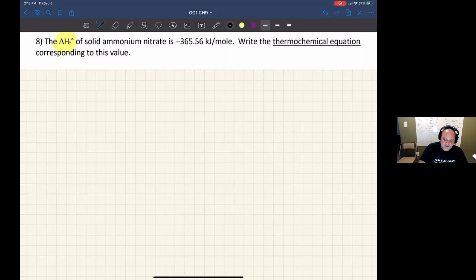So what are we looking at? We're looking at one mole of ammonium nitrate, and it says it's solid. So we know the delta H of the reaction is negative 365.56 kilojoules.